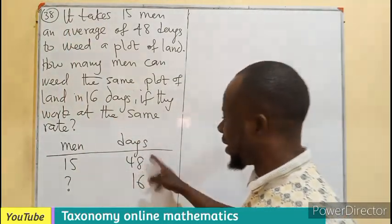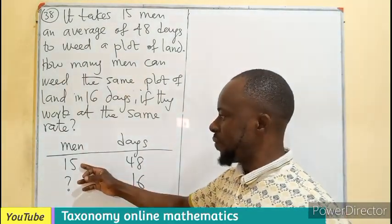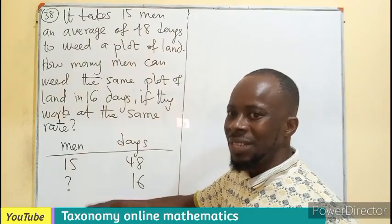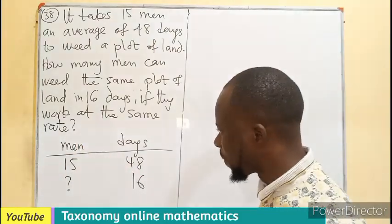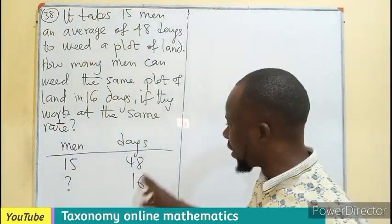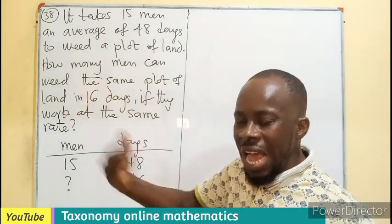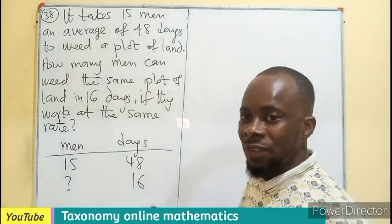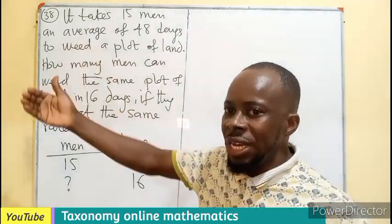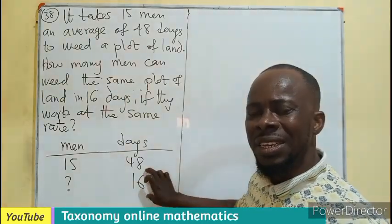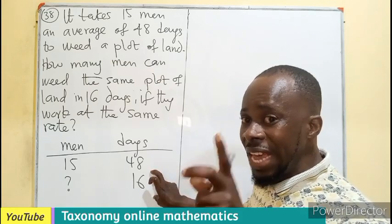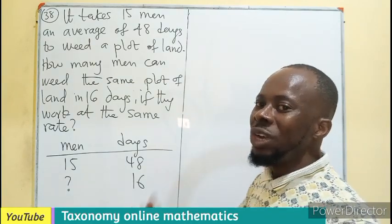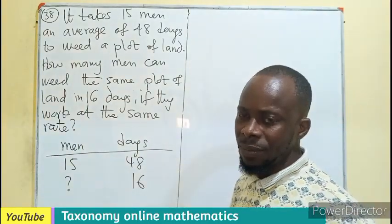Let's check. The men is 15, 48 days. The days has been decreased. So if the men also decrease, it means we are having direct proportion, but if the men increases, it means it is indirect proportion. Ask yourself, if 15 of you are working in a room, you need 48 days. Now if they decrease the days to 16 days and you are asked to work at the same rate without increasing your speed, will you be able to finish in 16 days? Something you need 48 days to do. I think you can't. So for you to be able to finish fast, you need more men, more hands on deck.